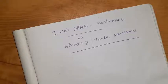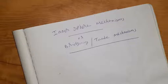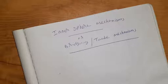Hello everyone. Today we are going to discuss inorganic chemistry. Electron transfer reaction is called the inner sphere mechanism, which is a bridging mechanism, also called the Taube mechanism. The outer sphere mechanism is a non-bridging mechanism, also known as Marcus theory.